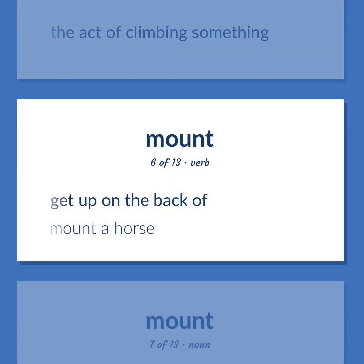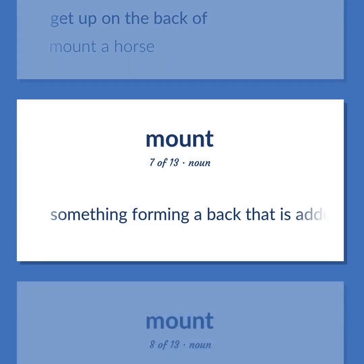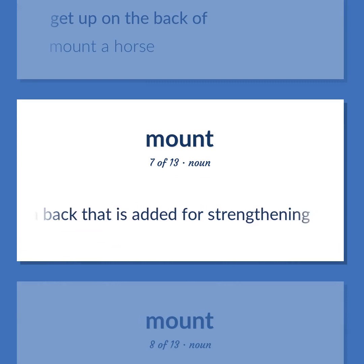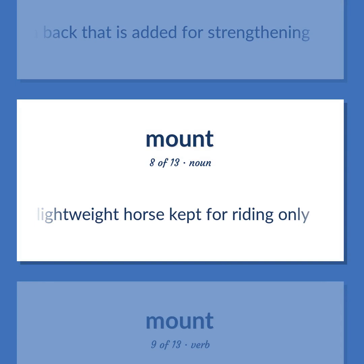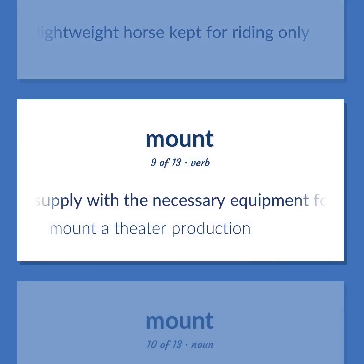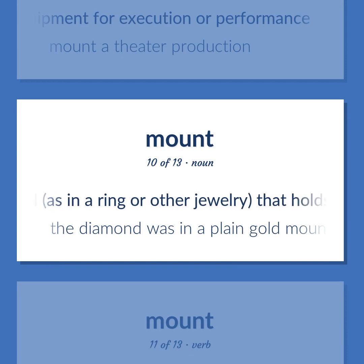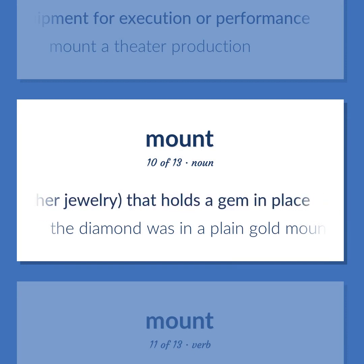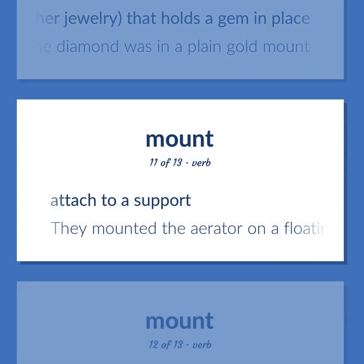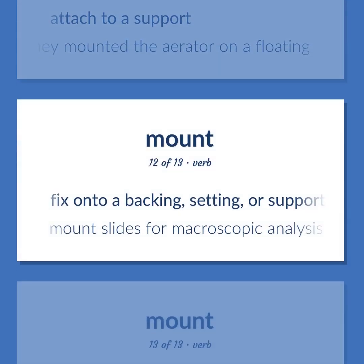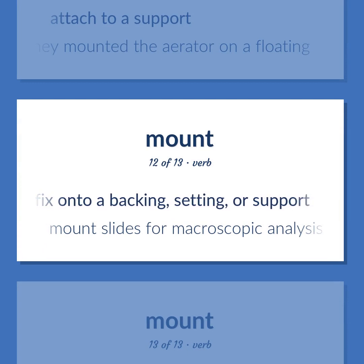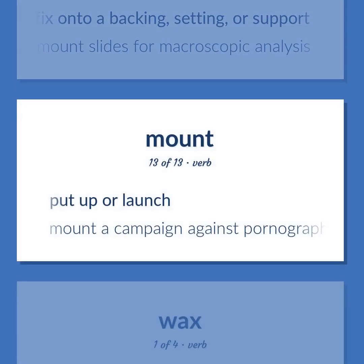Mount. Get up on the back of — mount a horse. Something forming a back that is added for strengthening. A lightweight horse kept for riding only. Prepare and supply with the necessary equipment for execution or performance — mount a theater production. A mounting consisting of a piece of metal, as in a ring or other jewelry, that holds a gem in place — the diamond was in a plain gold mount. Attached to a support — they mounted the aerator on a floating. Fix onto a backing, setting, or support — mount slides for macroscopic analysis. Put up or launch — mount a campaign against pornography.